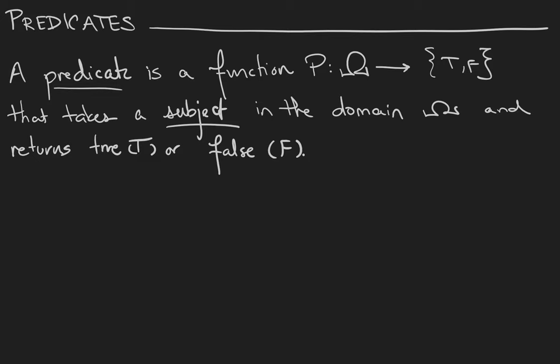A predicate is a function from a set of objects we're going to call omega, so this is just the domain, and it's a function whose output is true or false. What a predicate does is it takes a subject in the domain omega and it returns either true or false.